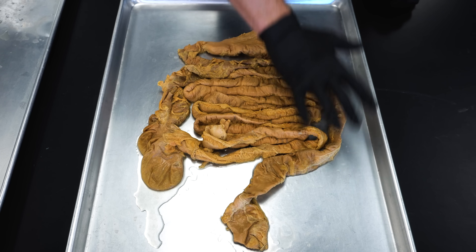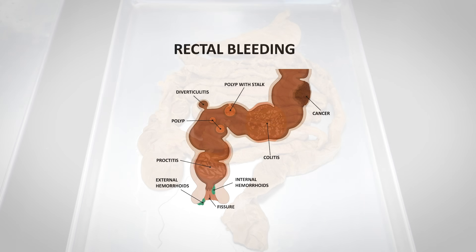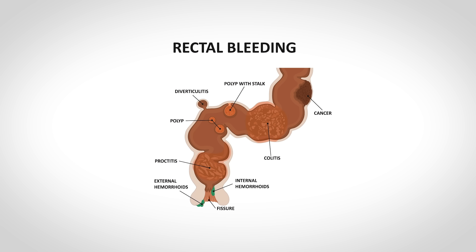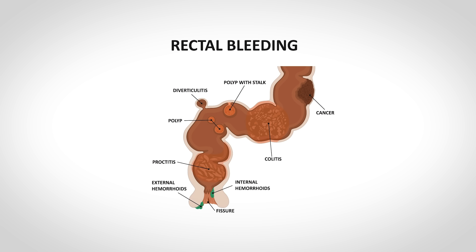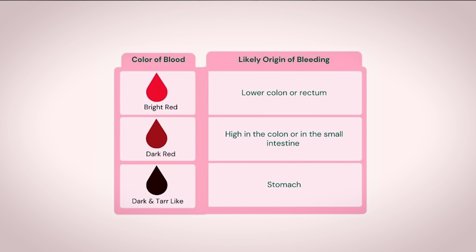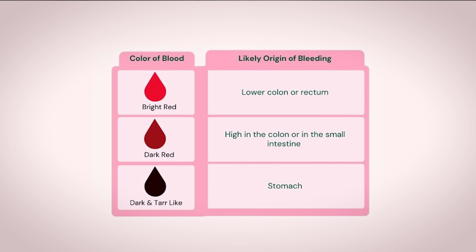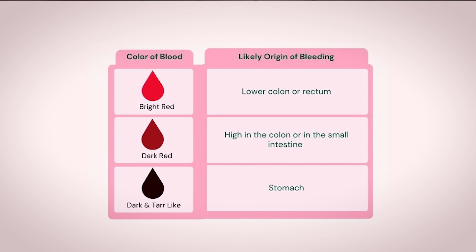We could technically have blood coming from anywhere in this pathway. When someone says rectal bleeding, that is more of a general term referring to any blood that passes from the anus, usually mixed with the stool, and into the toilet. The blood could be coming from multiple locations and can range in color from bright red, to dark maroon, or even a dark tarry color. The color is an indicator of where the bleed is coming from, and can also give us some insight into how serious the bleeding actually is.